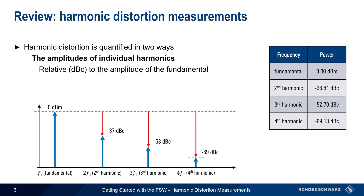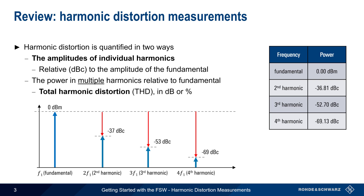The other way that harmonic distortion is quantified is as the combined power in multiple harmonics relative to the power of the fundamental. This is referred to as total harmonic distortion and can be reported either as a percentage or in dB.